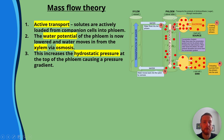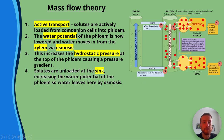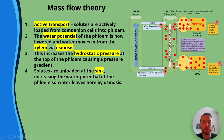So there's a pressure gradient going from the top of the phloem to the bottom. Solutes are unloaded at the sink, such as respiring roots or tubers, and that increases the water potential of the phloem at the bottom. Because the bottom of the phloem then has a higher water potential than the bottom of the xylem, water moves back into the xylem via osmosis.